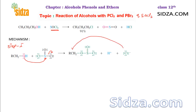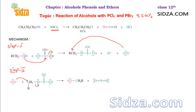In step two, the chloride ion acts as a nucleophile and attacks on the CH2 carbon. This causes the intermediate to break apart, forming SO2 gas and RCH2Cl — the alkyl halide. At the same time, another Cl⁻ is released. The H⁺ and Cl⁻ ions combine to form HCl.